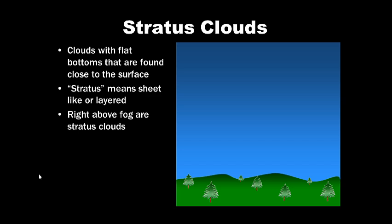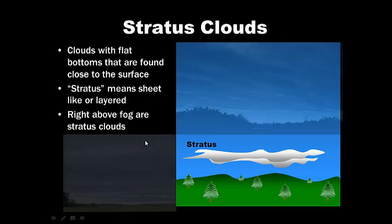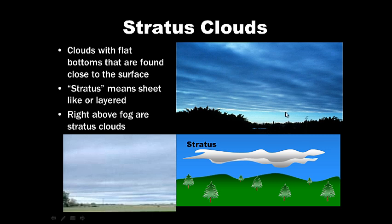Stratus clouds, first one. Clouds with flat bottoms that are found close to the surface are stratus clouds. Stratus means sheet-like or layered. So these are layered flat clouds, essentially. They're right above fog in terms of their elevation. So, stratus clouds are sheet-like. And they're flat, and they cover a lot of area. So, think of them as layered or sheet-like. Those are stratus clouds, and they're low to the surface. Here are some pictures. Notice, they cover a lot of area. They're huge, and they're flat. So those are stratus clouds.